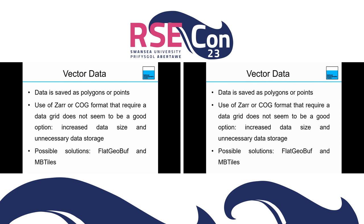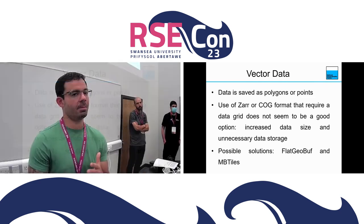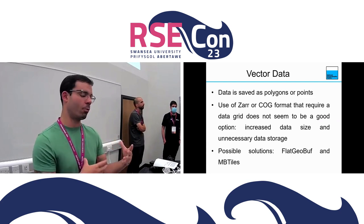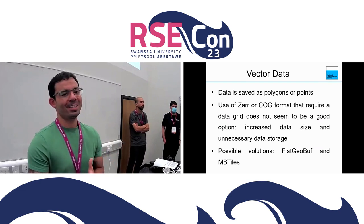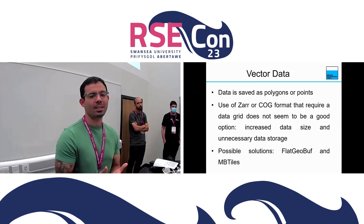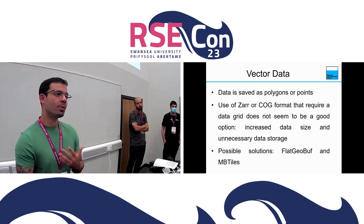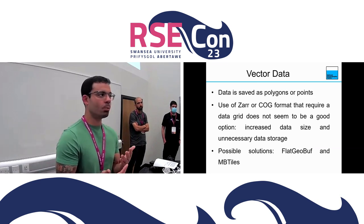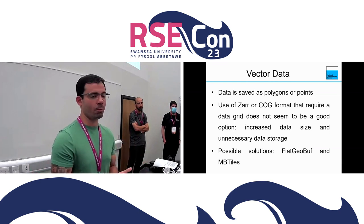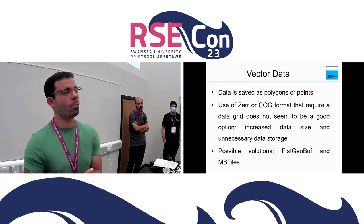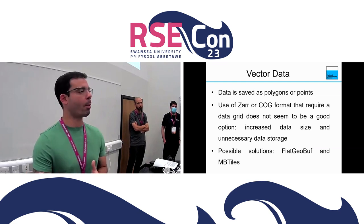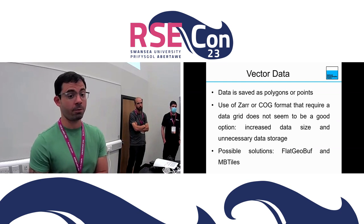For the vector data, we needed a different approach because in vector files the data is not saved as a grid — it's saved as polygons and points. One approach would be to convert these polygons and points to an image, but if you do that you can lose resolution or create a very large raster file with unnecessary information. So our approach was to work with vector in its own format. The possible solutions are FlatGeobuf and MBTiles.